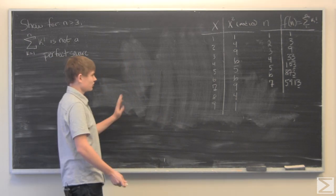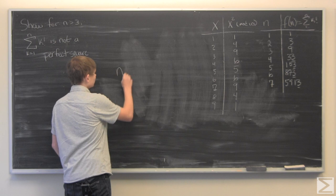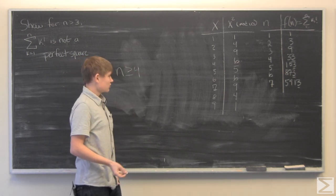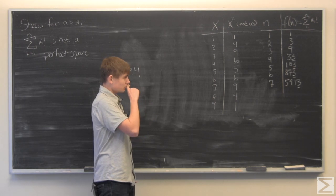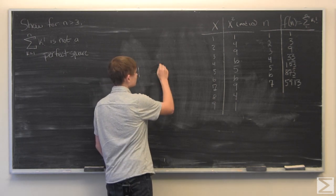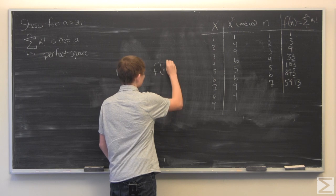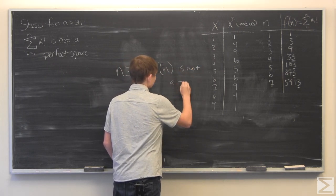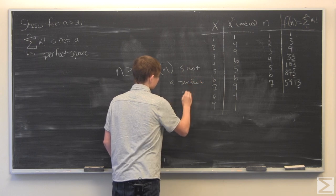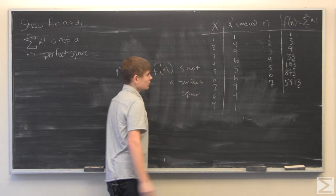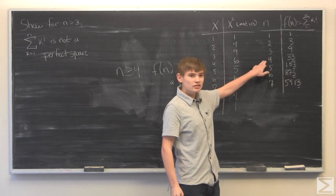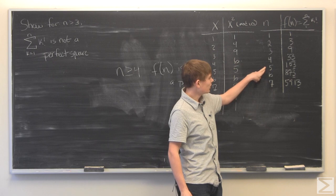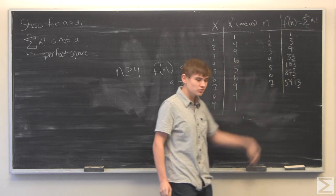...that for n greater than or equal to 4 there does not exist a number. So f of n is not a perfect square, since f of 4 is not a perfect square, and we just showed that for n greater than or equal to 5 this isn't true either.